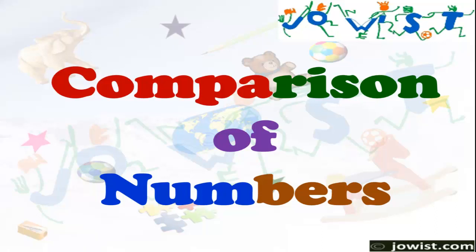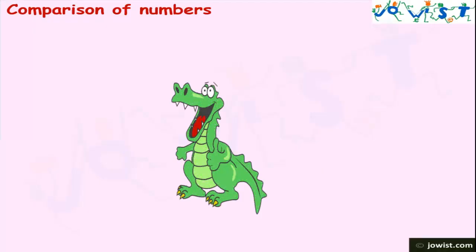Comparison of Numbers. This is a glutton dragon. It loves to eat apples.